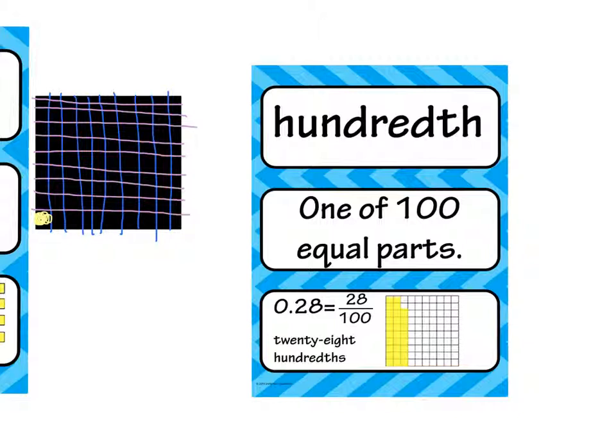In our example here, with 1 of 100 equal parts, they are showing 28 hundredths, two decimal places, hundredths. That's 28 out of 100. So that is 2 tenths, or 20 hundredths, plus 8 more little squares. This is a visual representation of 28 hundredths.